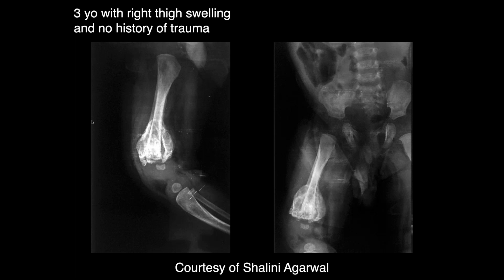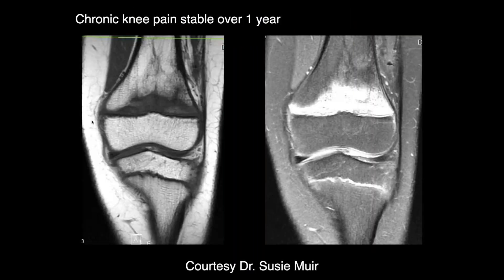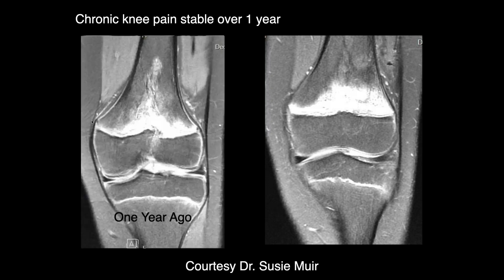Three-year-old with right thigh swelling and no history of trauma. That's a very abnormal-looking distal femur with marked heterotopic bone formation around the femur. The actual femoral cortex itself looks relatively intact — there's just this surrounding bone formation. Looking at two coronal images, T1 on the left and T2 or PD on the right, we can see low T1 signal at the distal femoral metaphysis and increased T2 signal there. Kind of nonspecific; I'd want to see other planes to see if that might be a fracture.